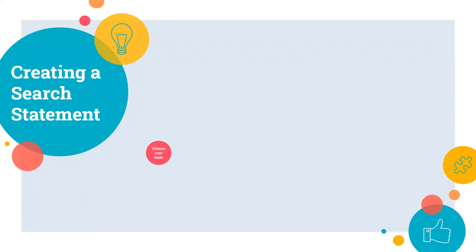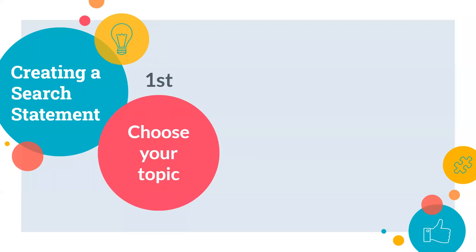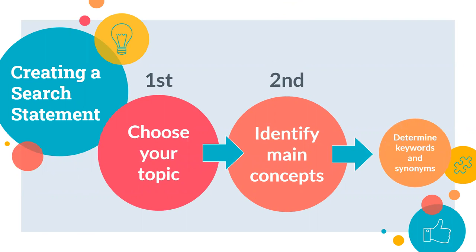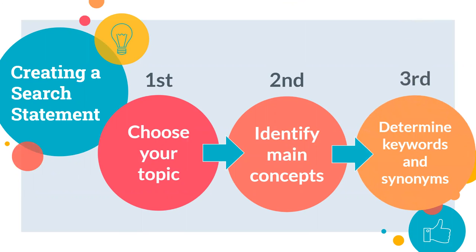To start searching, you'll want to have an idea of the topic so you know what kind of database to use. Secondly, you'll want to identify the main concepts within your research question or thesis. Once you do that, you can then determine the best keywords and possible synonyms for those same words and link them together with helpful research tools. We'll go over some examples of how this works later on.